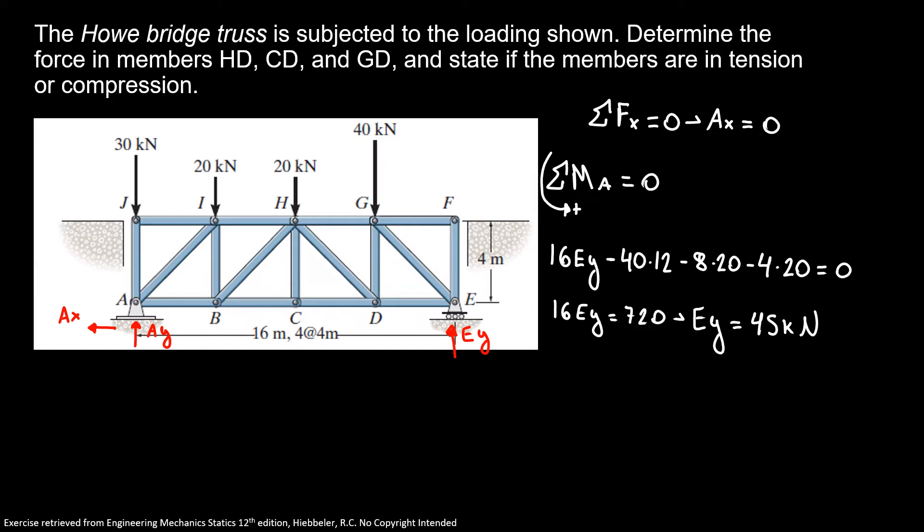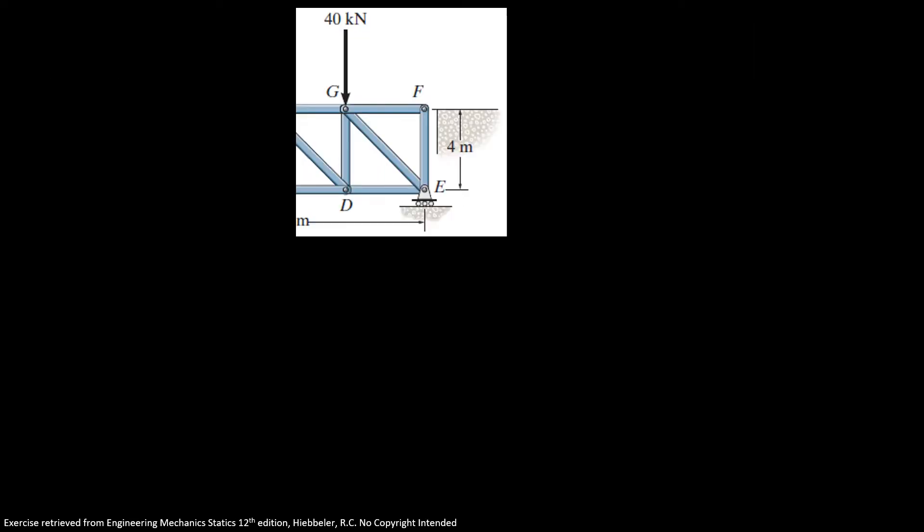Now since I'm going to do my section cut here, I don't need to find AY. Now we're going to find our members. So here is the only part of the truss we're going to need for this exercise.